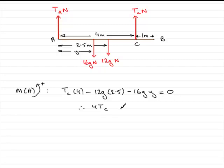If we add these two terms to the other side, if I add the 16gy, we've got 16gy. 12g times 2.5 is 30g, so if we add 30g to both sides, we've got that, 30g. So if we now divide by 4, we get tc equals 16gy plus 30g over 4.